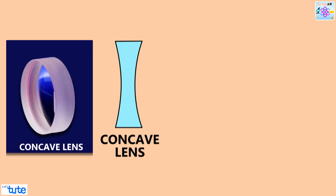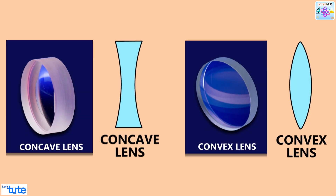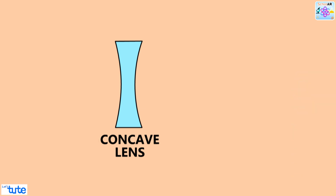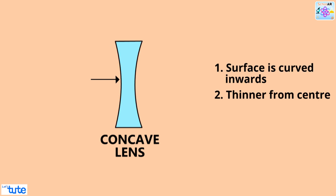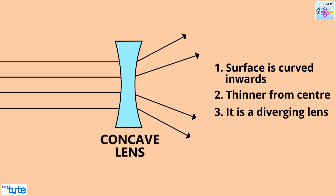A concave lens is a lens that possesses at least one surface that curves inwards and is thinner at its center when compared to its edges. It is a diverging lens, meaning that it spreads out light rays that have been refracted through it.